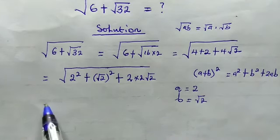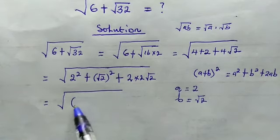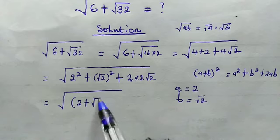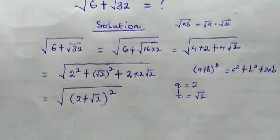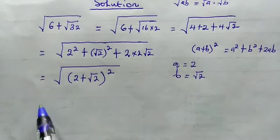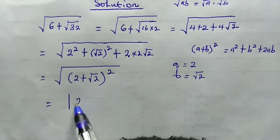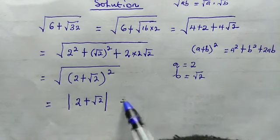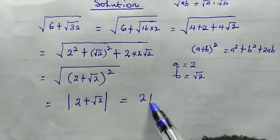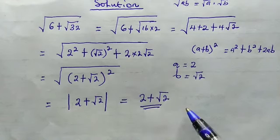So from here, this is equal to the square root of 2 plus root 2 to the power of 2. And from here, this is equal to the absolute value of 2 plus root 2, which is exactly equal to 2 plus root 2 and this is the right answer.